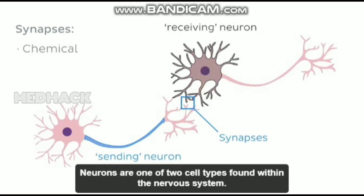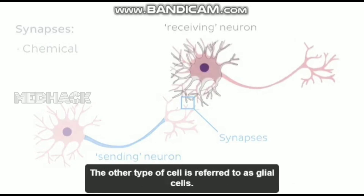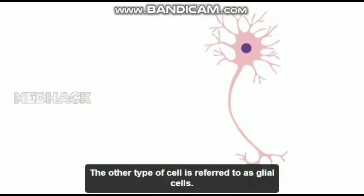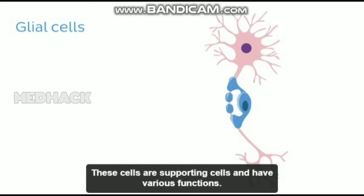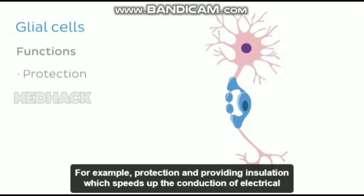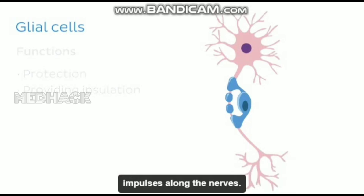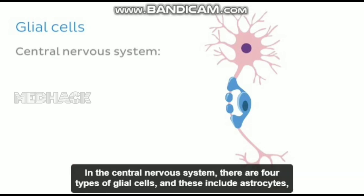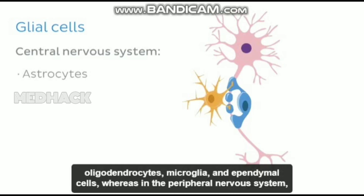Neurons are one of two cell types found within the nervous system. The other type of cell is referred to as glial cells. These cells are supporting cells and have various functions — for example, protection and providing insulation, which speeds up the conduction of electrical impulses along the nerves. In the central nervous system, there are four types of glial cells, and these include astrocytes, oligodendrocytes, microglia, and ependymal cells.